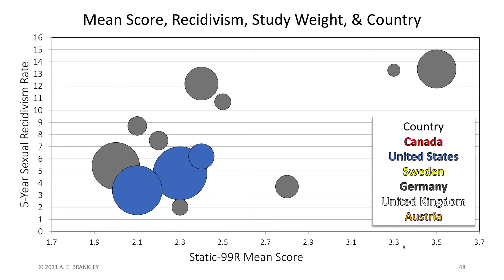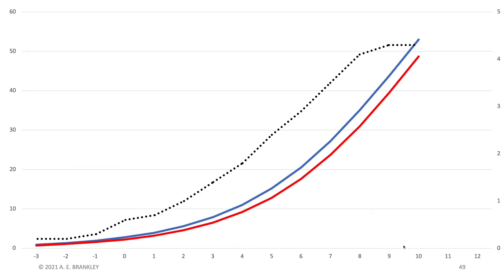I graphed the difference between the two recidivism rates here with this dotted line. The scaling is given on the right-hand side of the table. You'll notice that as the recidivism rates increase, represented by the blue and red line, the difference between them, the dotted line, also increases.